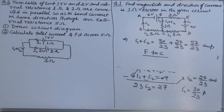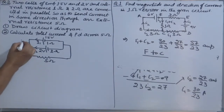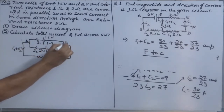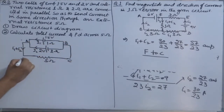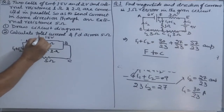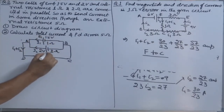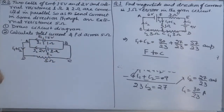While dividing current, make sure whatever current enters a junction, the same amount leaves the junction. Mark points A, B, C, D, E1, E2 so the loops are clear.